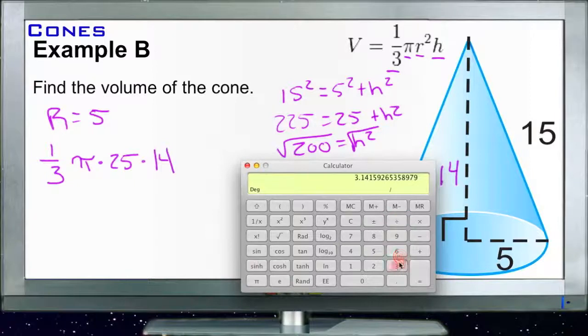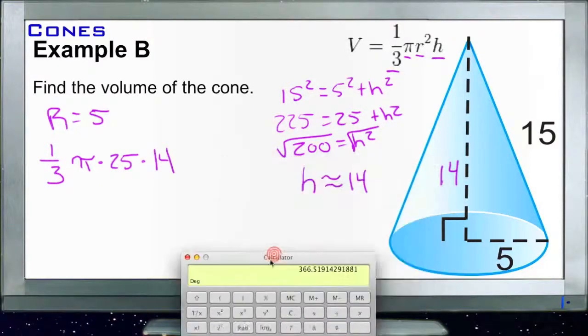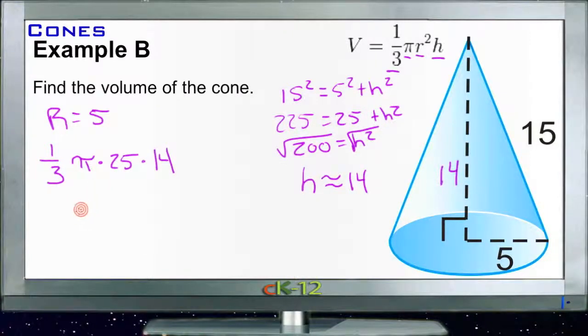Pi divided by 3, that's our one third of pi - a little over 1. Times 25, times 14, we get 366.5. So 366.5 is approximately equal to our volume, and of course that's cubic units because it's volume.